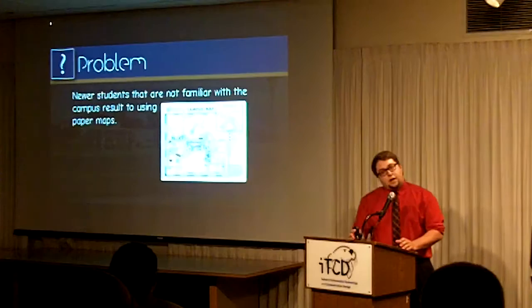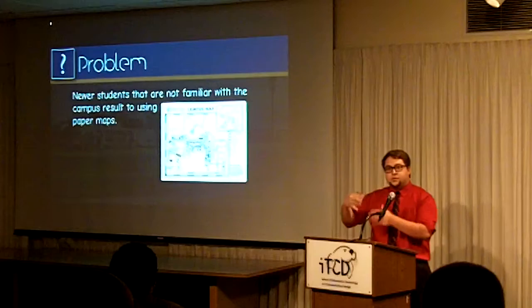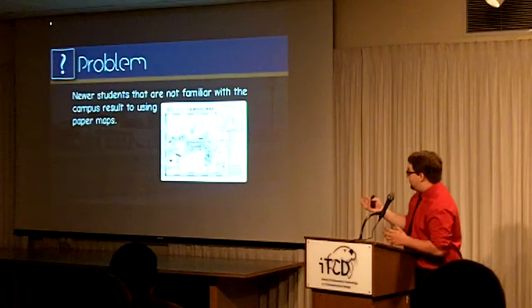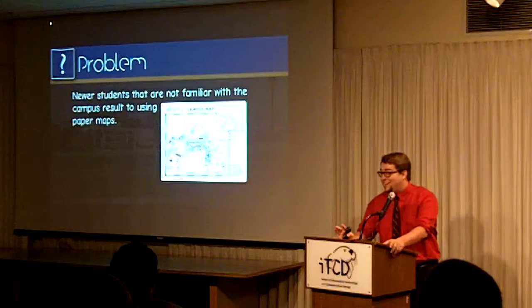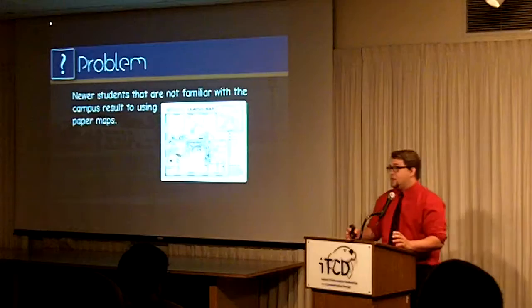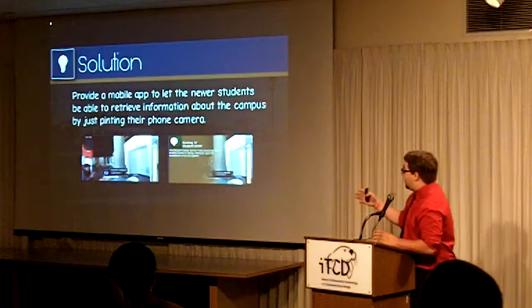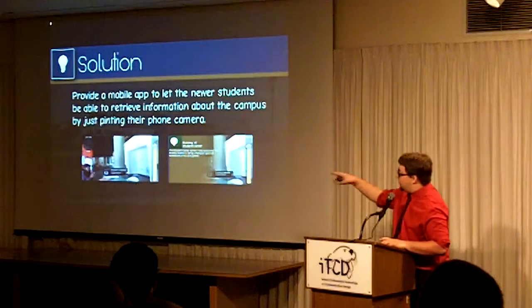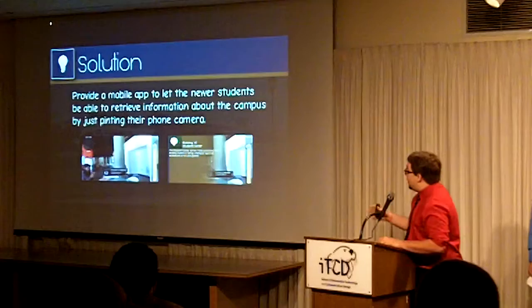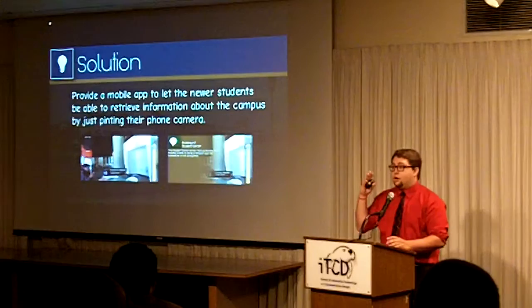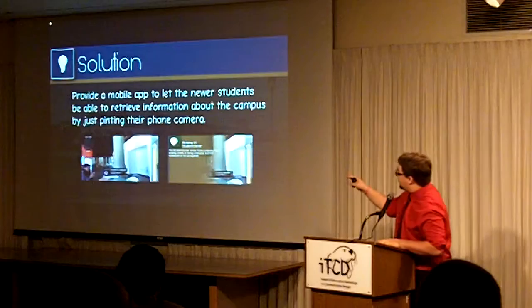We wanted to come up with a project of how we can use augmented reality and apply our knowledge into an application. We thought about the paper maps they use at CCB — they're not very good — so we took matters into our own hands. We made an application that provides the user information on every single building on campus. Based on the user's current location and where they're facing, using the compass inside the phone, it displays these nodes. There's also a little radar on the left that shows all the different nodes around campus. When you click on a node, it gives you information about the building and pretty much everything you need to know.